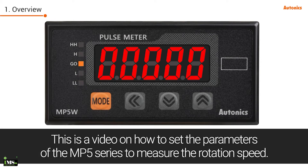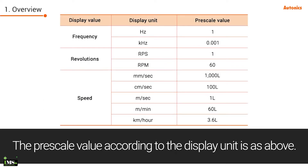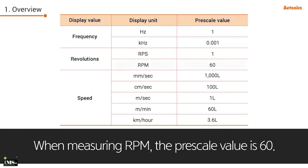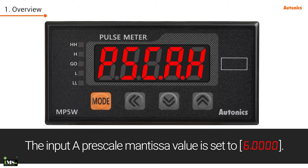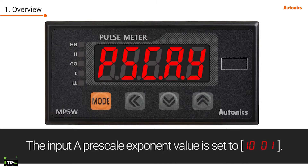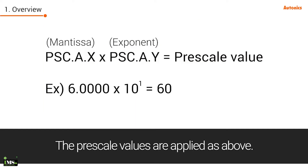This is a video on how to set the parameters of the MP5 series to measure rotation speed. The per scale value according to the display unit is as shown. When measuring RPM, the per scale value is 60. The input A per scale mantissa value is set to 6.0000, and the exponent value is set to 10 to the power of 1. The per scale values are applied as above.